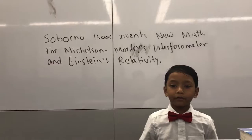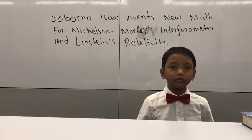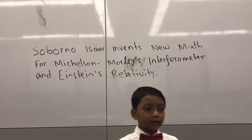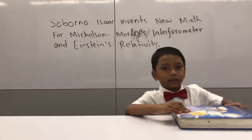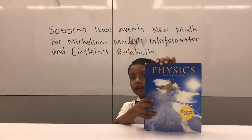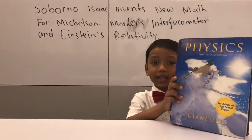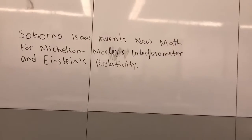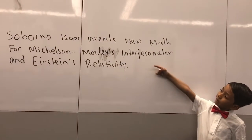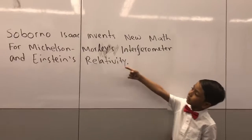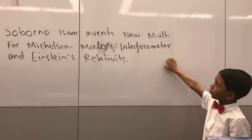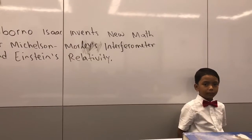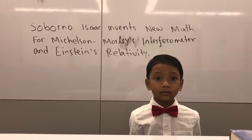I have good news and bad news. The bad news is that when you look at the textbook, like this book, it's very hard to understand. But the good news is that, as you see on the wall here, I invented a new map to support Michelson-Morley's interferometer and Einstein's special theory of relativity.